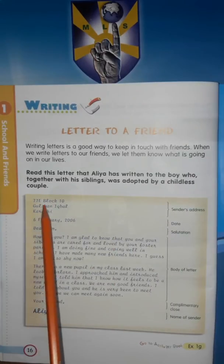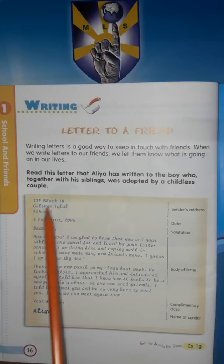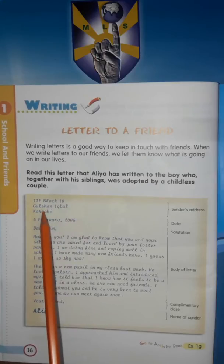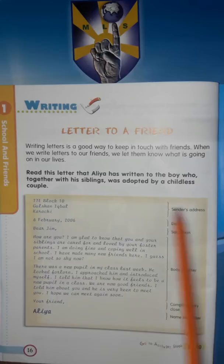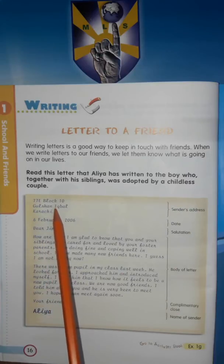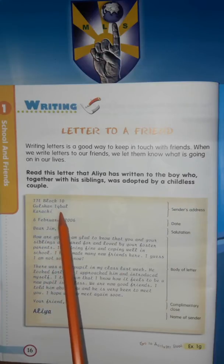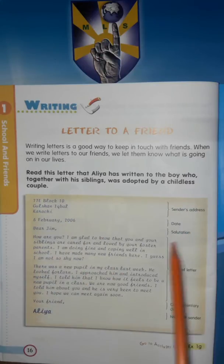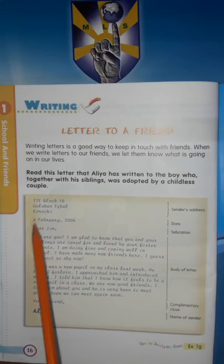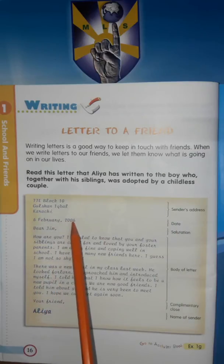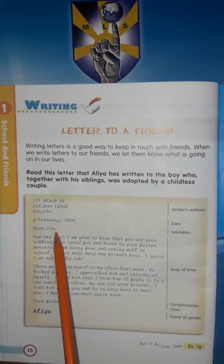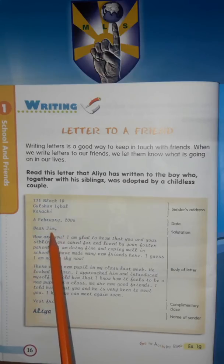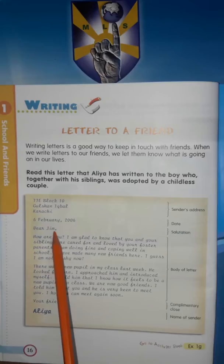77 E Block 10, Gulshan-e-Iqbal, Karachi. This is the Sender's Address — the address of the person who is sending the letter. Date: 6 February 2006. Dear Jim — this is the salutation, the person to whom the letter is being sent.